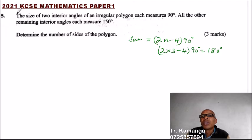So we can show that (2n - 4) multiplied by 90 - that is the sum of the interior angles - equals: from the information we are given, two angles measure 90, so we multiply 2 times 90 to get the total of the two angles.